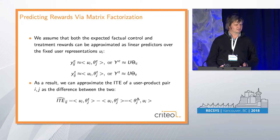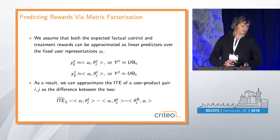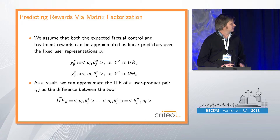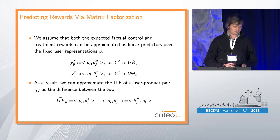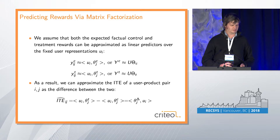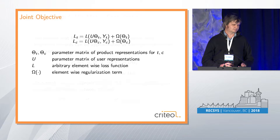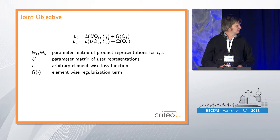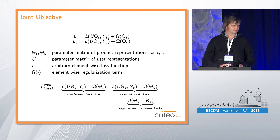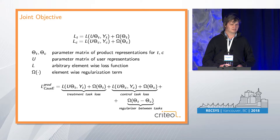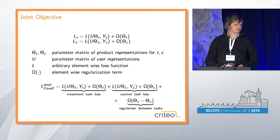Each item is a matrix factorisation: yc is approximately U times theta-c, and yt is approximately U times theta-t. The treatment effect is the difference between these two. Each becomes a standard matrix factorisation with a loss — cross-entropy for clicks — plus a regulariser. The joint optimisation simply adds these two losses together, with a shared user embedding parameter, and regularises such that theta-t and theta-c are not too far from each other. It's quite a simple algorithm.